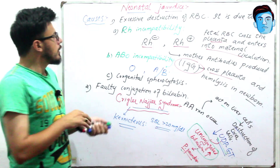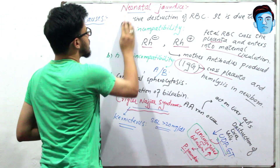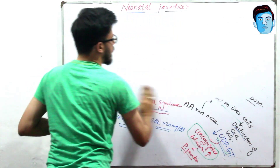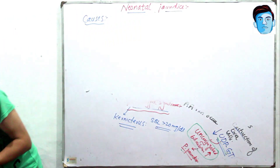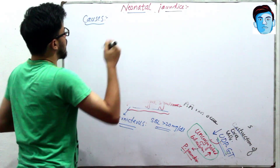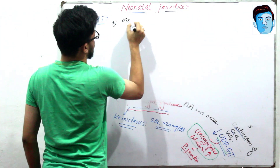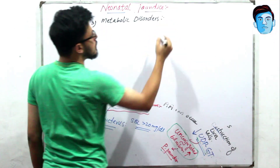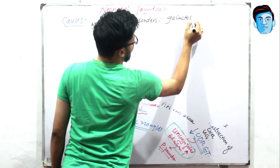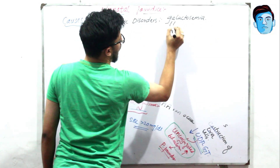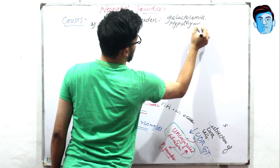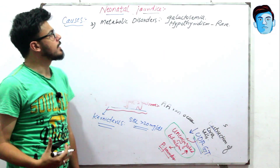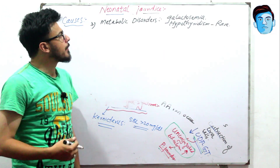Another cause of pathological jaundice is metabolic disorders. These include conditions like galactosemia and hypothyroidism. However, these conditions are very rare.